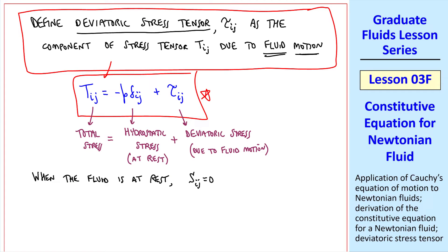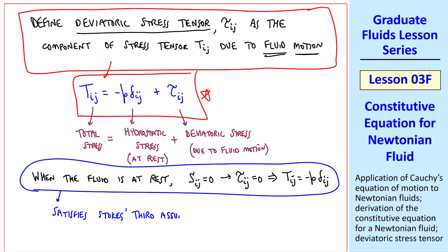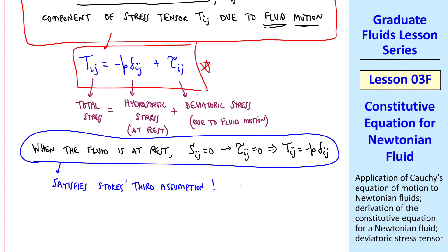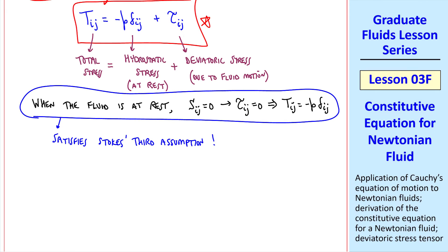When the fluid is at rest, Sij is zero, which, as we'll find out, that means tauij is zero. And therefore, Tij is equal to negative P deltaij. This statement satisfies Stokes' third assumption. So now all we have to deal with is the other two assumptions to find our constitutive equation.